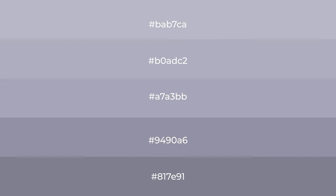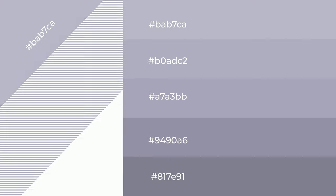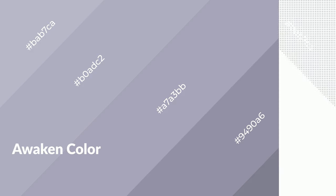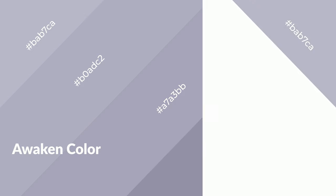To generate shades of a color, we add black to the color, and it is used in patterns and 3D effects. Layers and shades create depth and drama. Awaken is a cool color and it emits calming, serene, soothing, refreshing, spacious, unwinding, peace, and relaxed emotions.